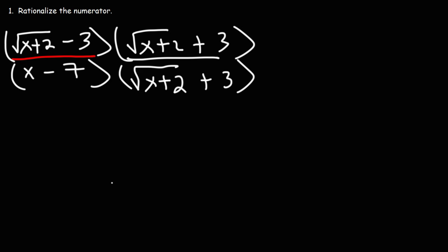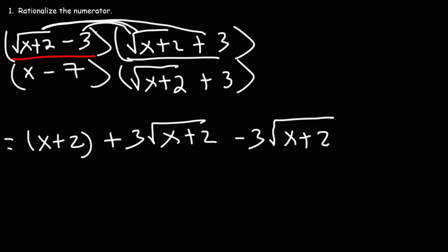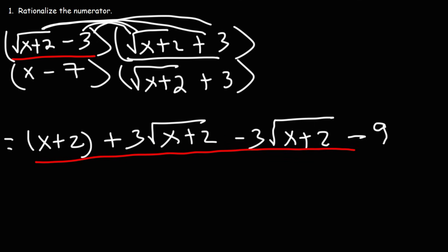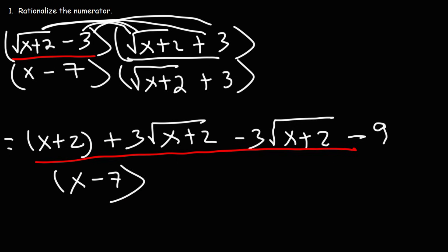So now let's FOIL. The square root of x plus 2 times itself: the square roots will cancel and we're just going to get x plus 2. Next we have the square root of x plus 2 times 3, so that's 3 root (x plus 2). Pairing those two middle terms together gives us positive 3 root (x plus 2) and negative 3 root (x plus 2). And then negative 3 times 3 is negative 9. We're not going to FOIL what's on the bottom since they're not conjugates of each other.